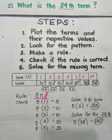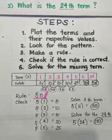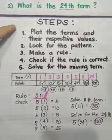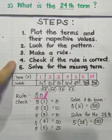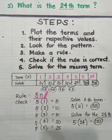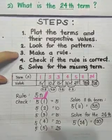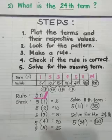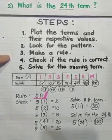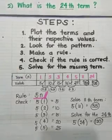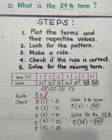Problem solved. That's how you find the missing number or term. So again, do not forget the steps: plot the terms and the values using a table, look for a pattern, then make a rule based on the pattern, check if the rule is correct, and if it is correct, solve for the missing term. I will provide more examples in the next videos that I will make. Thank you and I hope you learned something for today. Bye!